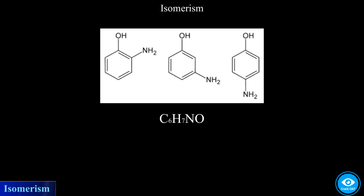It just so happens that many molecules and compounds have the exact same chemical formula. However, where they differ is in their three-dimensional molecular shape. So, their atoms are arranged in different orientations. These substances are referred to as isomers, and due to their different shapes, this implies that they have different physical and chemical properties.